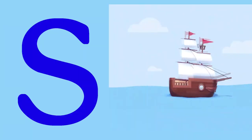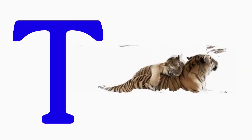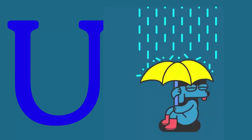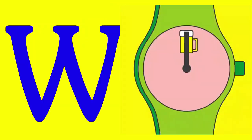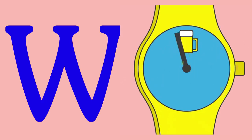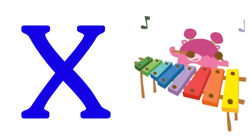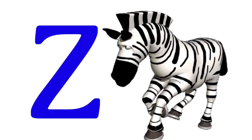Q for queen, R for rose, S for sheep, T for tiger, U for umbrella, V for van, W for watch, X for xylophone, Y for yak, Z for zebra.